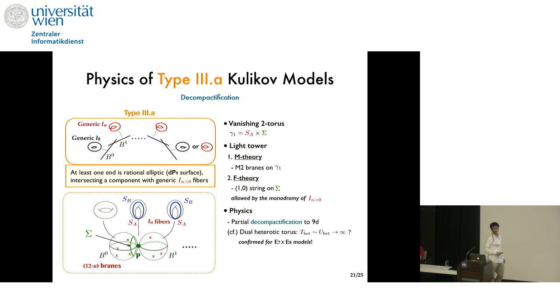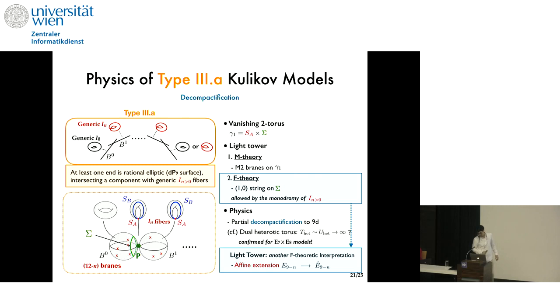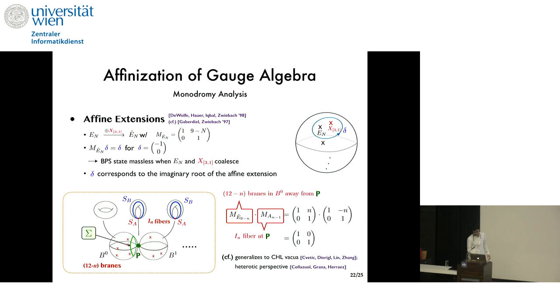Now one important difference is that now around P you have a non-trivial IN monodromy and therefore you cannot fiber SB cycles so you only get one shrinking two torus. Now in M theory M2 branes wrapping this two torus lead to a light KK tower, and in F-theory the tower arises from the string around this one cycle sigma and this is allowed by the monodromy of IN. Now for the physics we propose now decompactification to 9D and this will be strongly supported if the heterotic dual torus has not only the KK modulus but also the complex structure going to infinity at the same rate and happily we could confirm this behavior at least for E7 times E8 models by using the known mirror map applicable to a particular class of models.